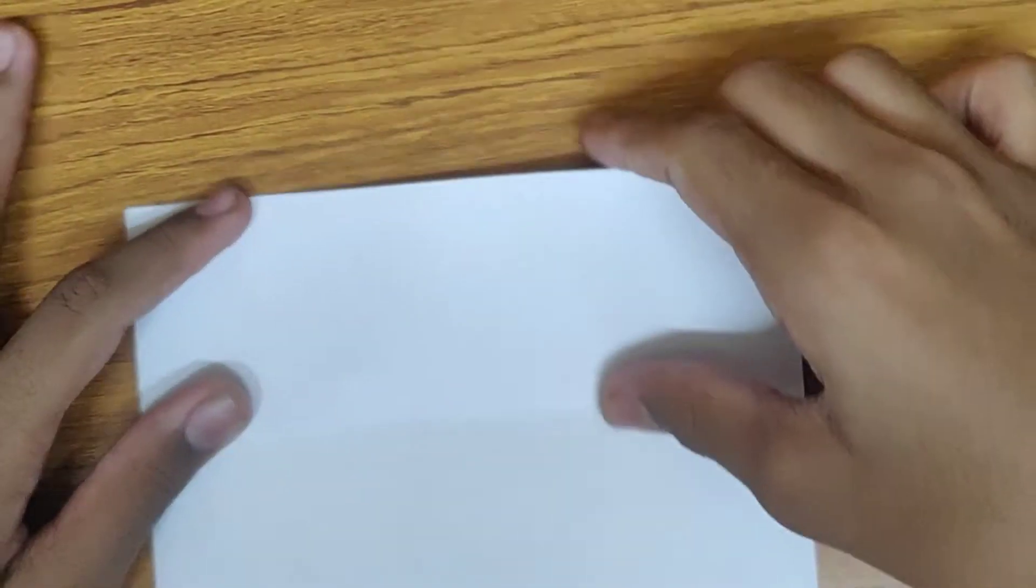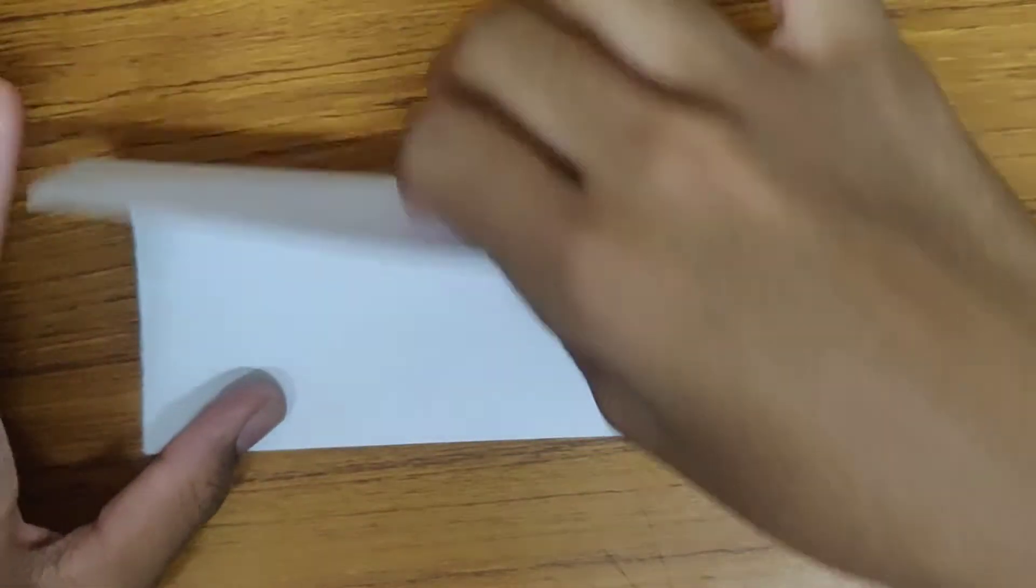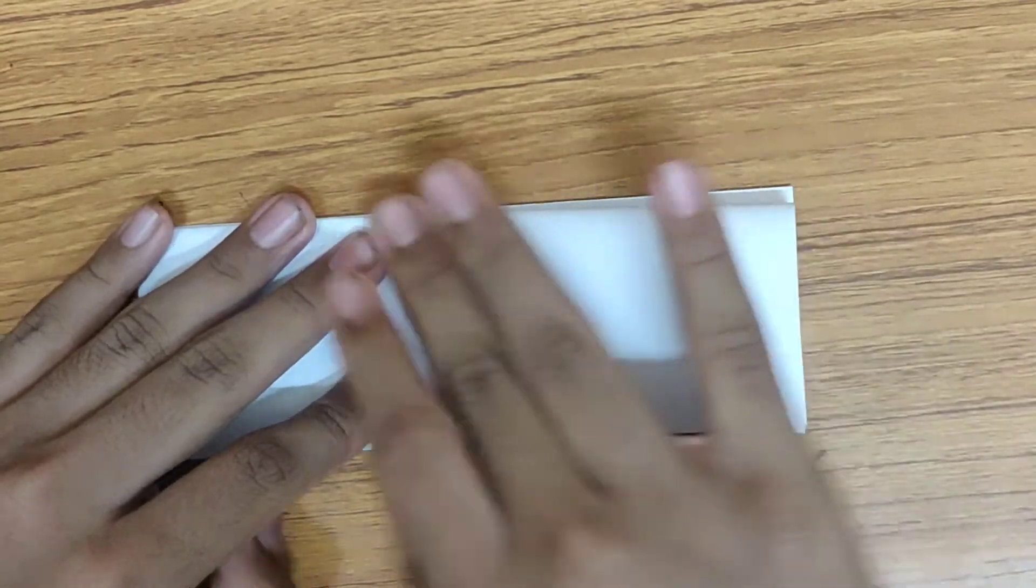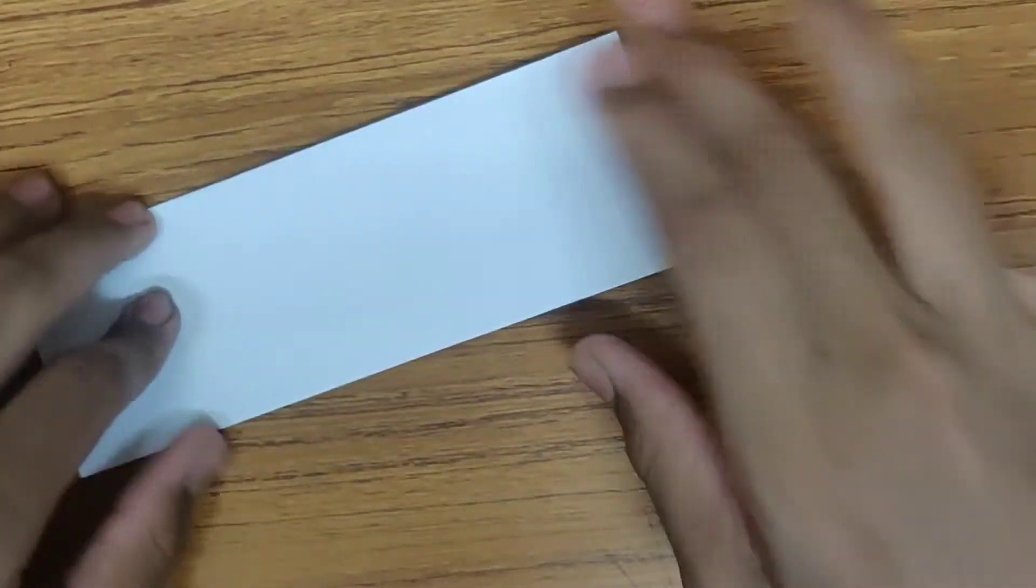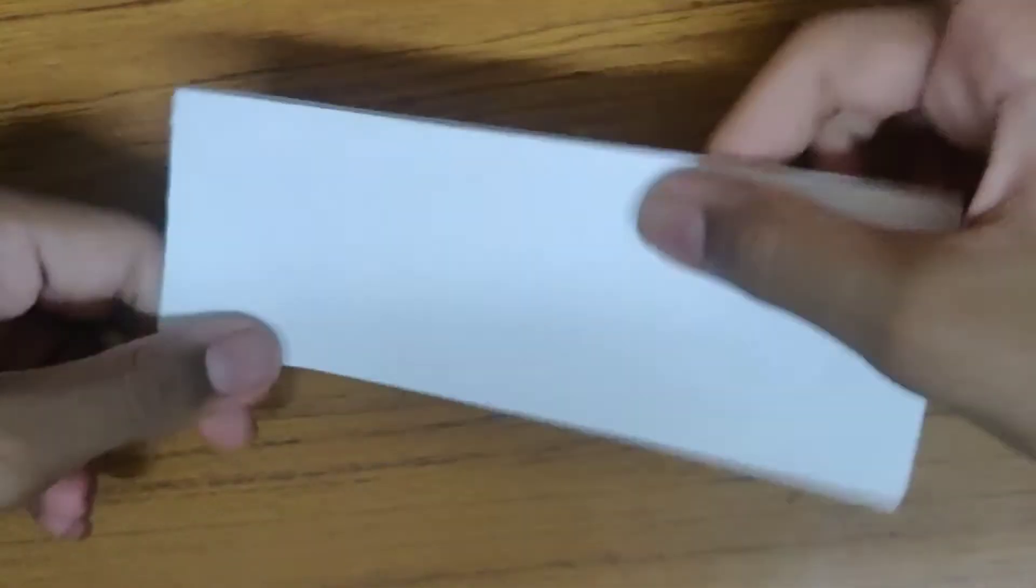Now just a few folds, try to make them as accurate as possible. Take this flap and fold it like this. You'll have a strip of rectangle like this.